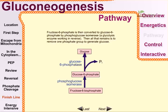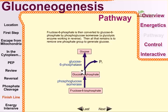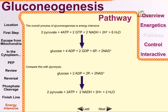Fructose-6-phosphate is then converted to glucose-6-phosphate by phosphoglucose isomerase, also a glycolysis enzyme working in reverse. All that remains is to remove one phosphate group to generate glucose. This step is also energetically unfavorable in the forward direction, so glucose-6-phosphatase cleaves the phosphate group from glucose-6-phosphate, generating free glucose.